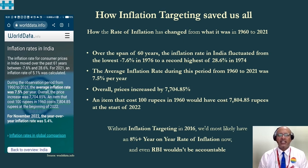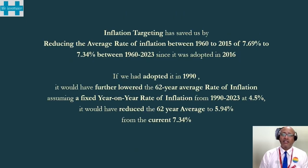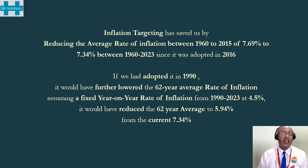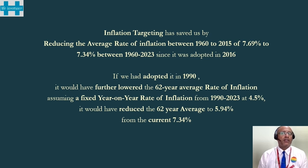Without inflation targeting in 2016, we'd most likely still have an 8% plus year-on-year rate of inflation, and even the RBI wouldn't be accountable. Inflation targeting has saved us by reducing the average rate of inflation from 7.69 percent (1960 to 2015) to 7.34 percent (1960 to 2023) since it was adopted in 2016. If we had adopted it in 1990, the same time as New Zealand, it would have further lowered the 62-year average rate of inflation — assuming a fixed year-on-year rate of 4.5 percent from 1990 to 2023 — reducing the 62-year average to 5.94 percent from the current 7.34 percent.